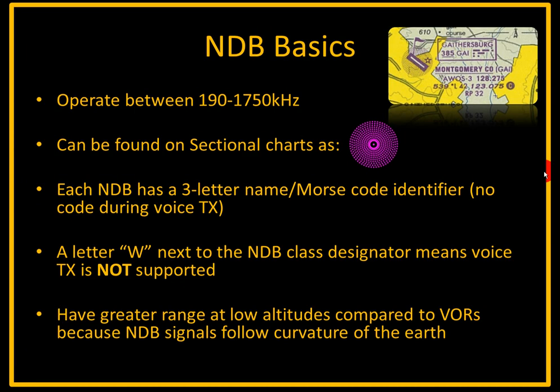Keep in mind, just like a VOR, if it has a Morse code identifier and it also has voice capabilities, when you start talking, the Morse code will turn off until you finish talking, so it's not beeping that code over your voice. In addition, there could be a letter W next to the NDB class designator, meaning that voice transmission is not supported. Here we can see an example of an NDB called Gaithersberg, with the three-letter identifier Golf Alpha India, on channel 385, along with the Morse code identifier.